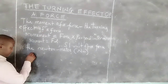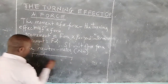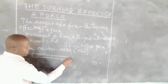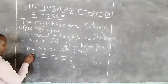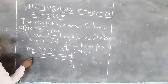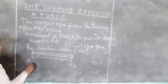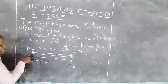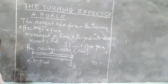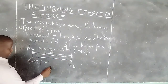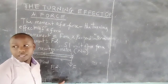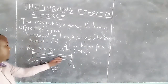If a force F is acting through a given distance, and there is a pivot, the perpendicular distance is measured from the pivot up to where the force is applied. Therefore, the moment of this force will be given by force times the distance — in other words, the work done by the force in the turning of this metal bar, for example.